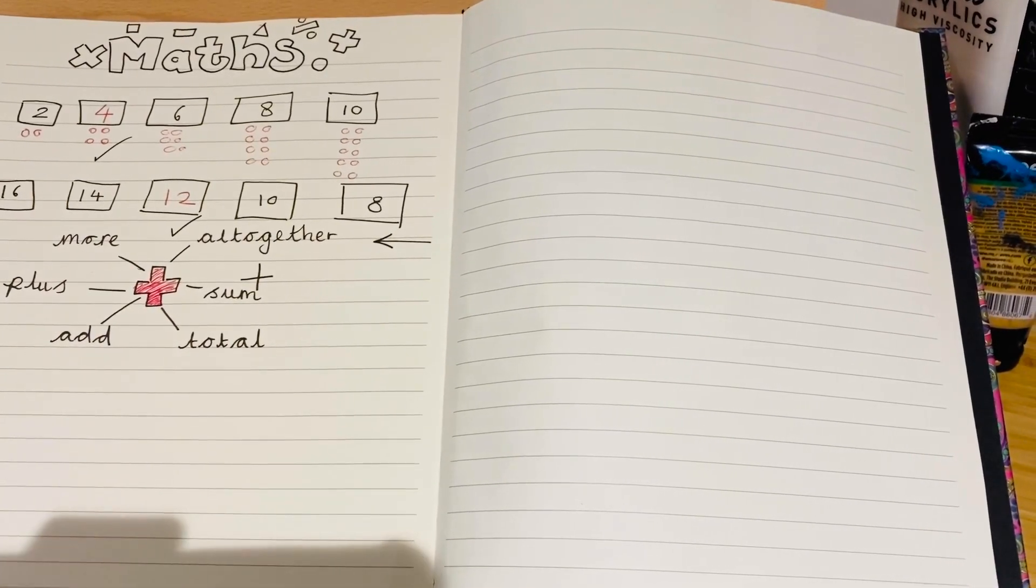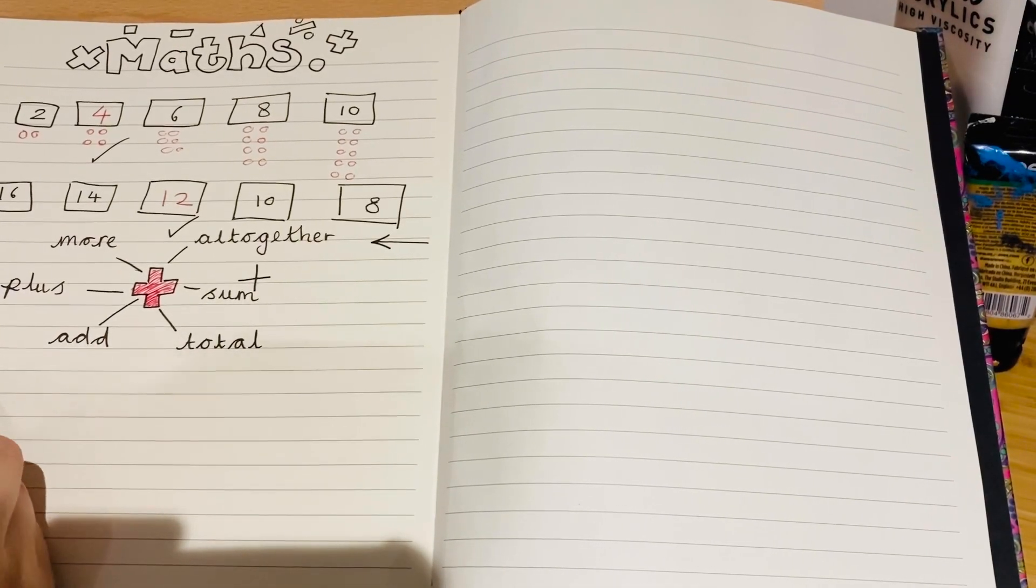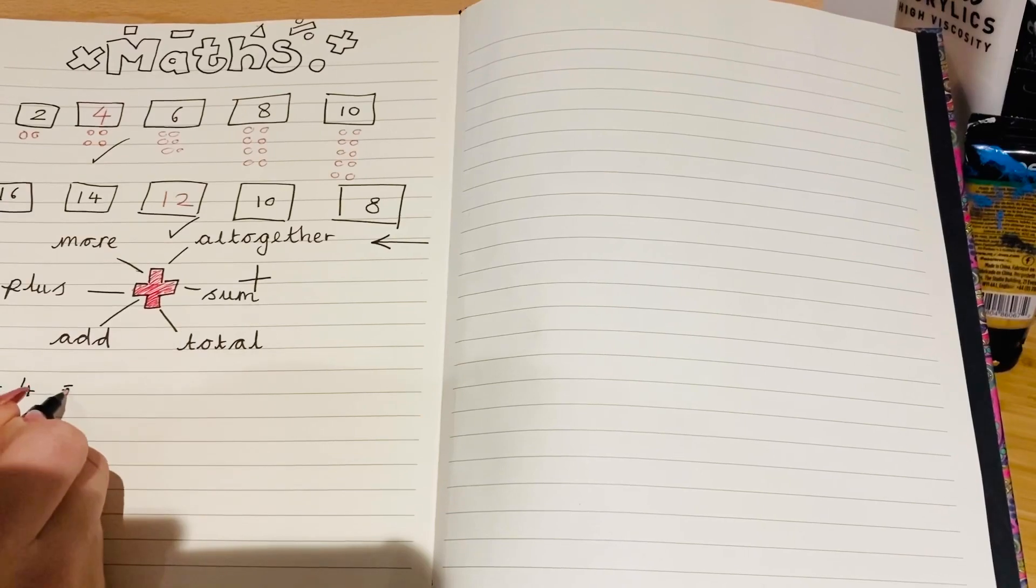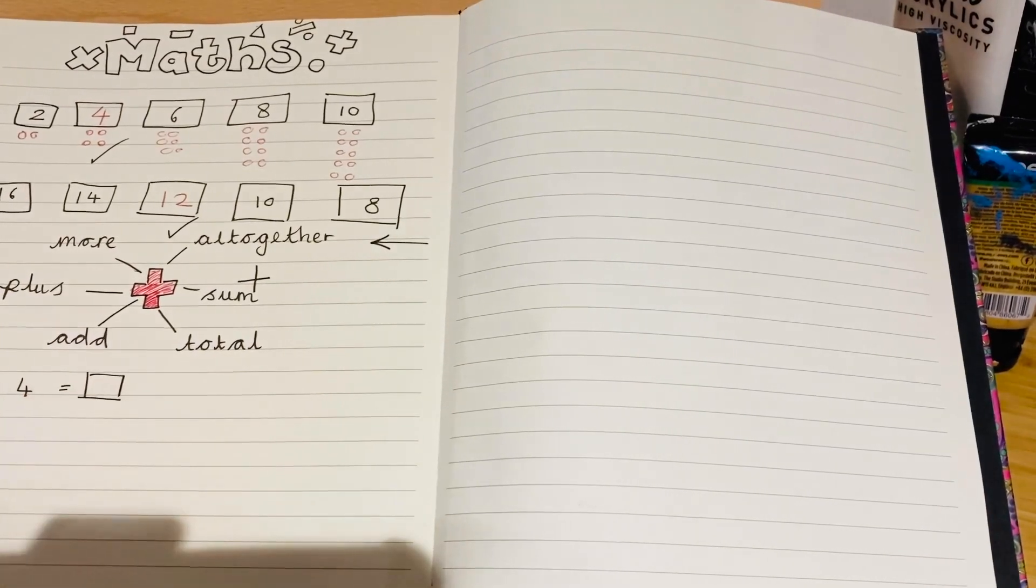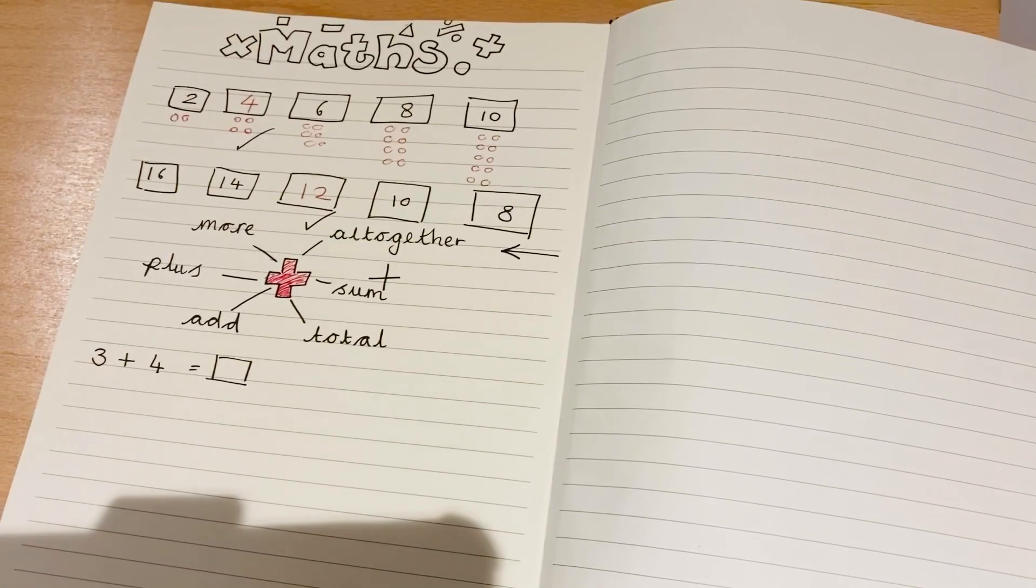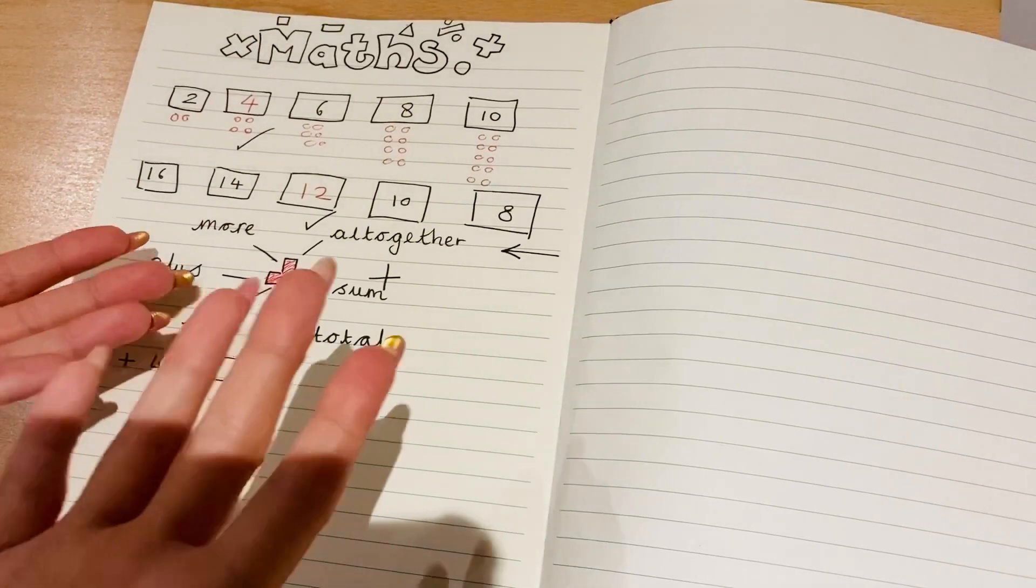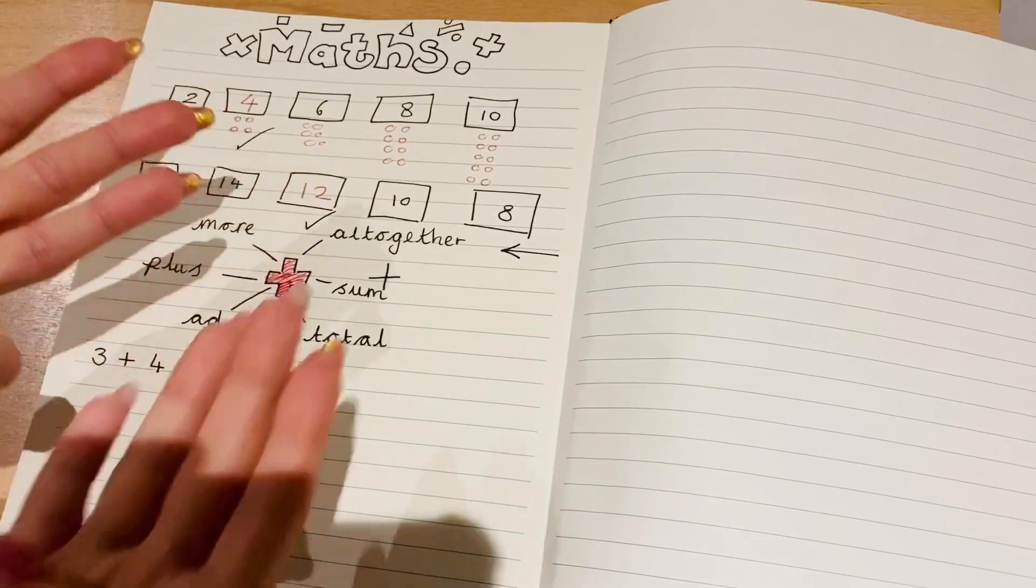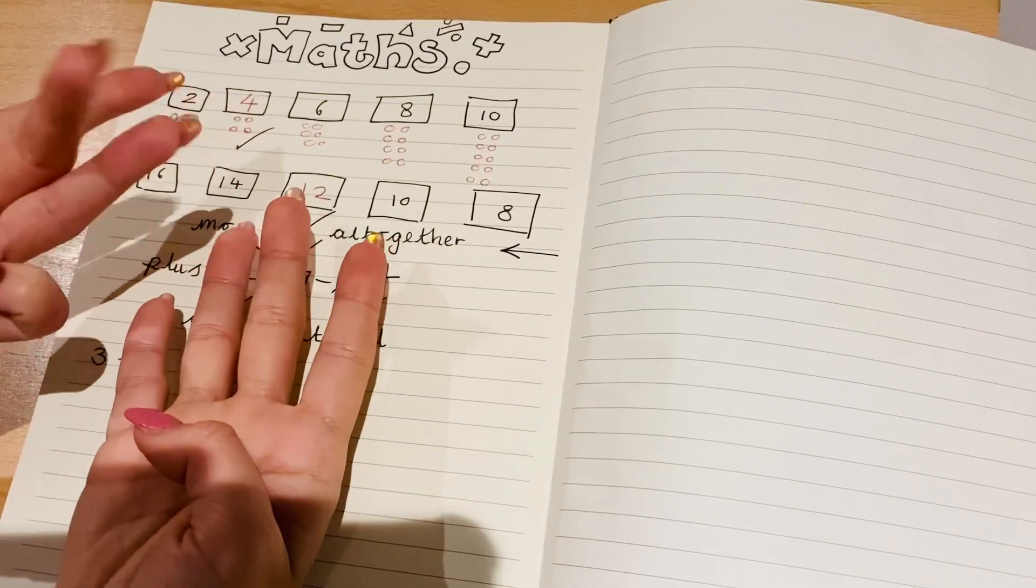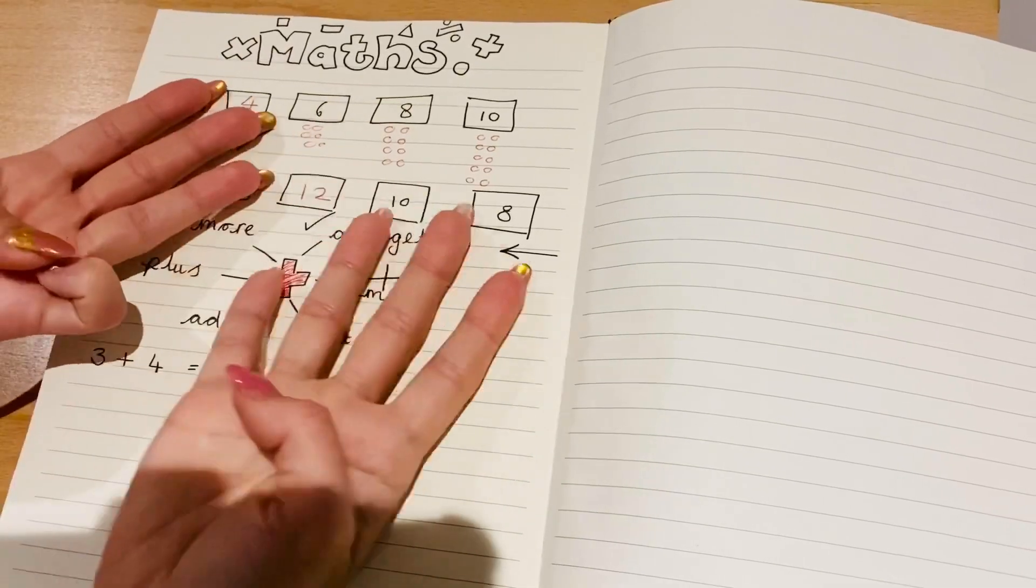See if you can work out this number sentence without any help. So I'm going to show you three plus four equals something. On your piece of paper, have a go at figuring out three plus four. So there's different ways you can solve this. One way is you could use your fingers. So you could say three on one hand and four on the other. One, two, three, four, five, six, seven. Three plus four makes seven.